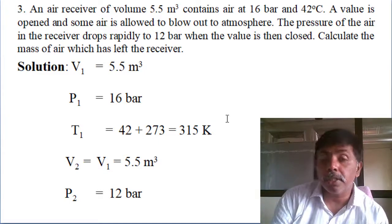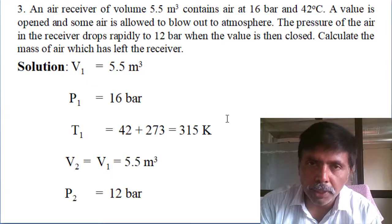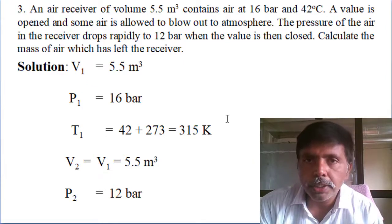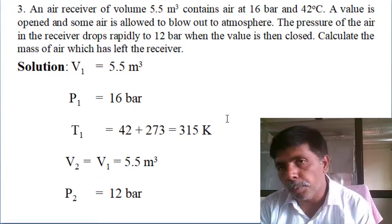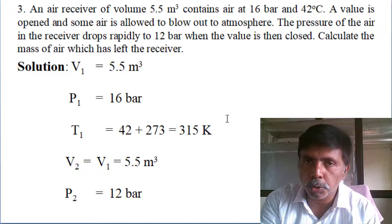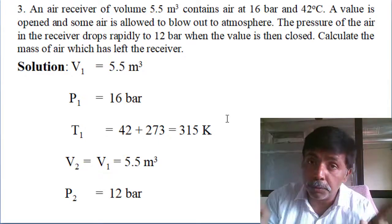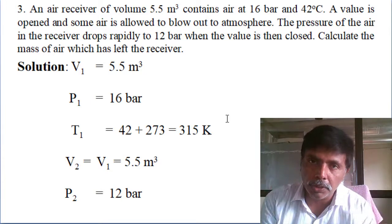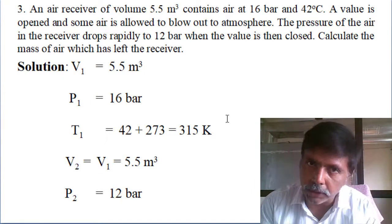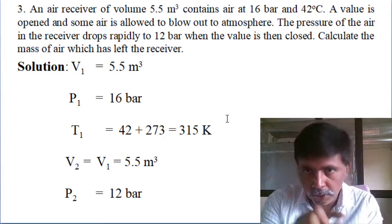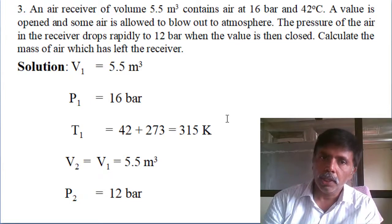First, calculate the mass of air before opening the valve, then after closing the valve. The receiver volume is fixed at 5.5 m³ — it does not change. This is an open system. Initial pressure P1 = 16 bar, initial temperature = 42 + 273 = 315 K. Final volume = 5.5 m³ (same), final pressure P2 = 12 bar.